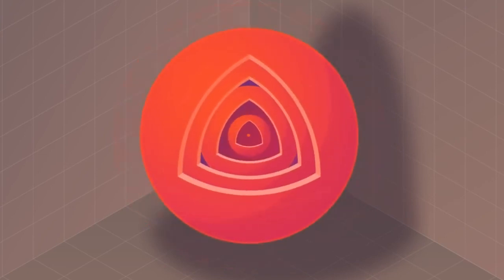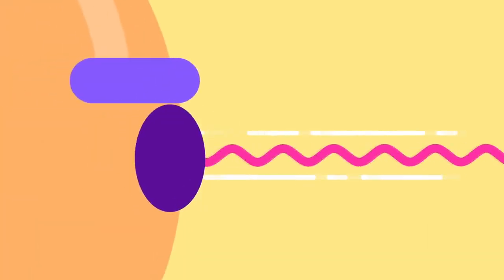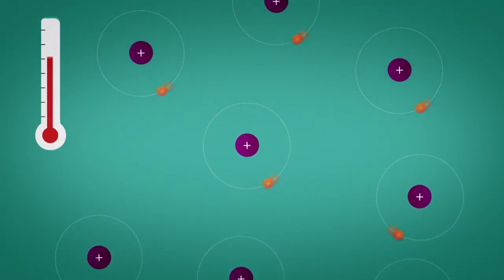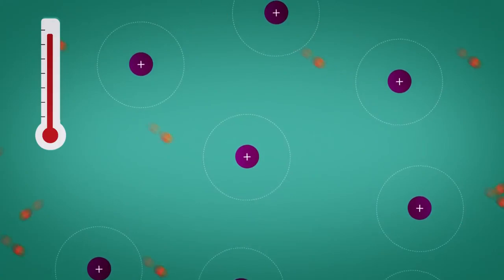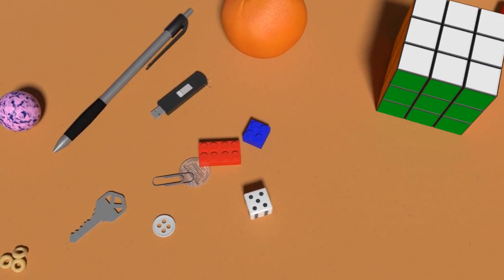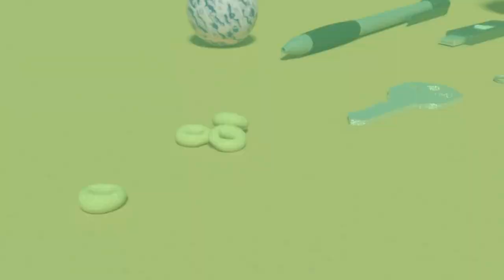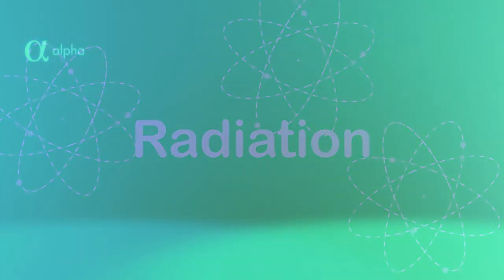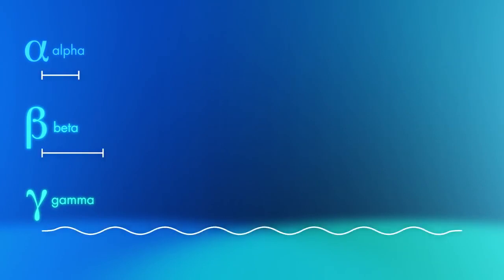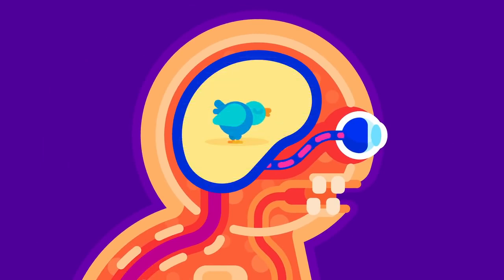Any type of radiation is characterized by the energy transportation from a radiating physical system to a receiving physical system. Every material body with a temperature above absolute zero radiates or absorbs energy. Consequently, all the bodies you deal with in everyday life continuously exchange energy. Therefore, radiation, being one of the qualitative varieties of energy, is a measure of motion of matter — an objective reality that exists outside and independent of our consciousness.